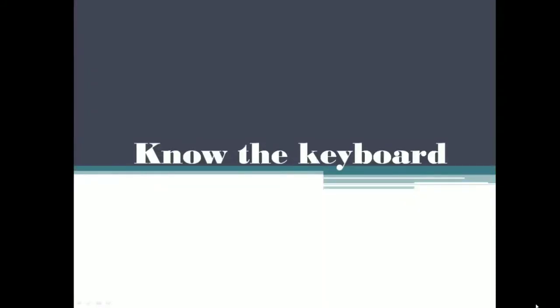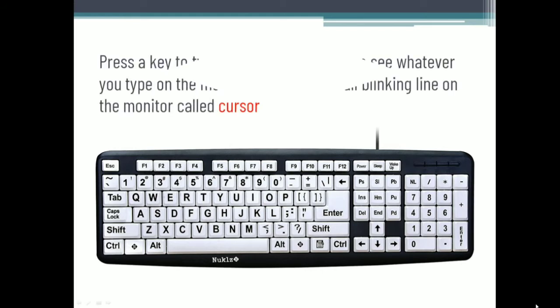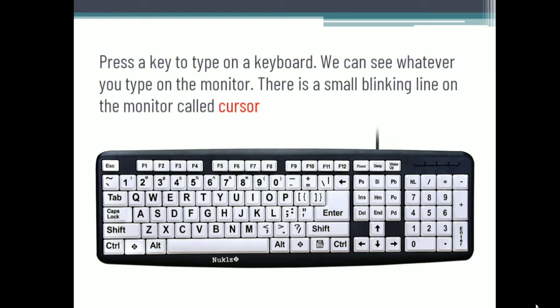Good morning all. Today let's start our fourth chapter: Know the Keyboard. We have already studied that the keyboard is one of the important parts of the computer. We have to press a key to type on the keyboard, and we can see whatever we have typed through the monitor. In the monitor we can see a small blinking light called the cursor. As we type, the cursor moves to the right. In this chapter we are going to discuss various keys on the keyboard.